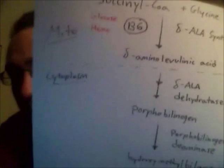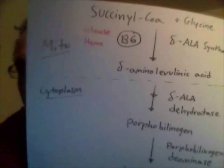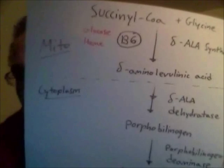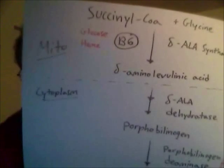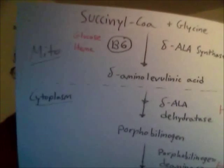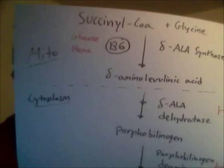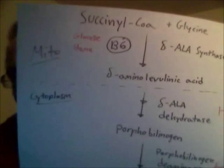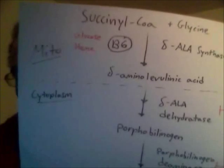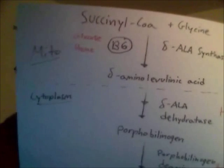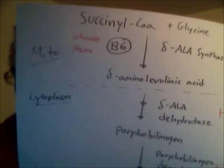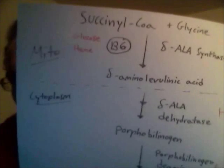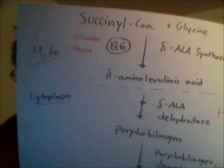Porphobilinogen — 'porph' there means purple, so if you think of purple being colorful, he went to college and sort of livened up a bit, tried some things, so now he's porphobilinogen. And that's going to be important later when we talk about the diseases. Porphobilinogen — he's lively now, he's purple.